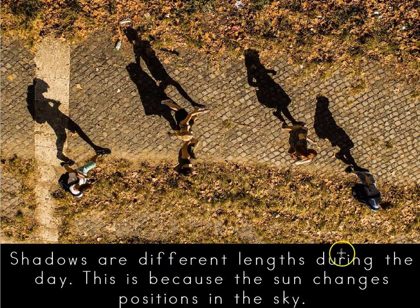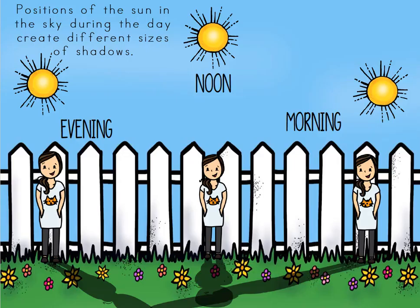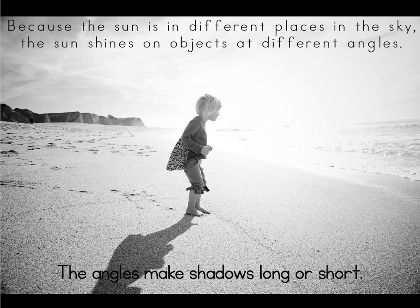Shadows are different lengths during the day, and this is because the sun changes positions in the sky. Positions of the sun in the sky during the day create different sizes of shadows. In the evening, that's what it looks like. At noon, that's what it looks like. And then in the morning, that's what the shadow would look like. Because the sun is in different places in the sky, it shines on objects at different angles. The angles make shadows long or short.